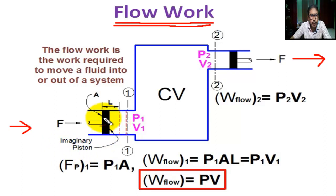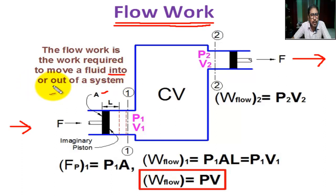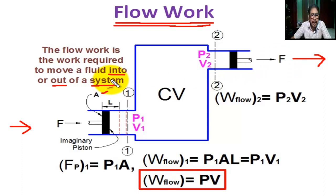The imaginary piston of cross-section A has a force F that pushes the entire fluid element to a distance L. Flow work is the work required to move a fluid into or out of a system.